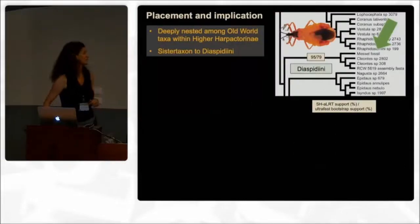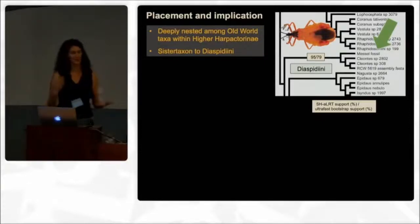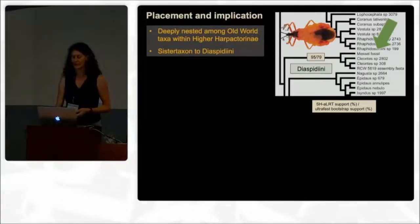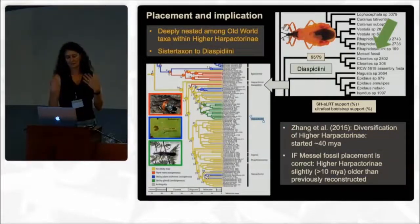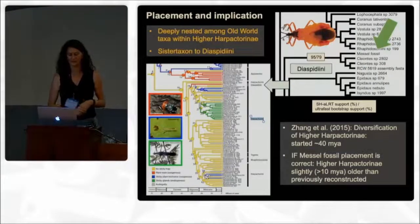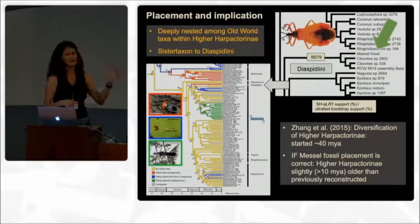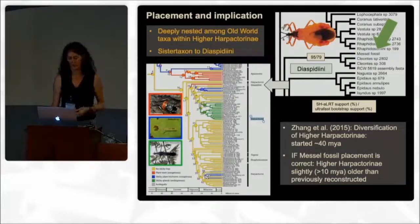Zooming in a little bit, what we see is the fossil deeply nested among old-world taxa within the higher Halpacturine, which is somewhat pleasing because it is from the old world. We recovered it as sister taxon to the DSBDines, which are odd-looking African so-called resin bugs — really unusual among the higher Halpacturine. Based on analyses we did a few years ago, diversification of higher Halpacturines started about 40 million years ago, so now that we know this fossil is somewhere close to the base of higher Halpacturine, it would push that back by about 10 million years.